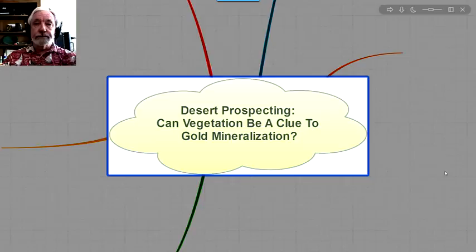We asked some questions about what was the most pressing question you had regarding desert prospecting. And the following question came up, and it's a good one. So, for desert prospecting, can vegetation be a clue to gold mineralization? Let's take a look.